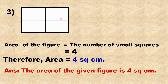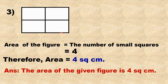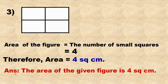Third example: the area of the figure equals the number of small squares. It is divided into squares with side 1 cm. Count the number of squares: 1, 2, 3, 4. There are 4 squares. Therefore, area = 4 square cm. The area of the given figure is 4 square cm.